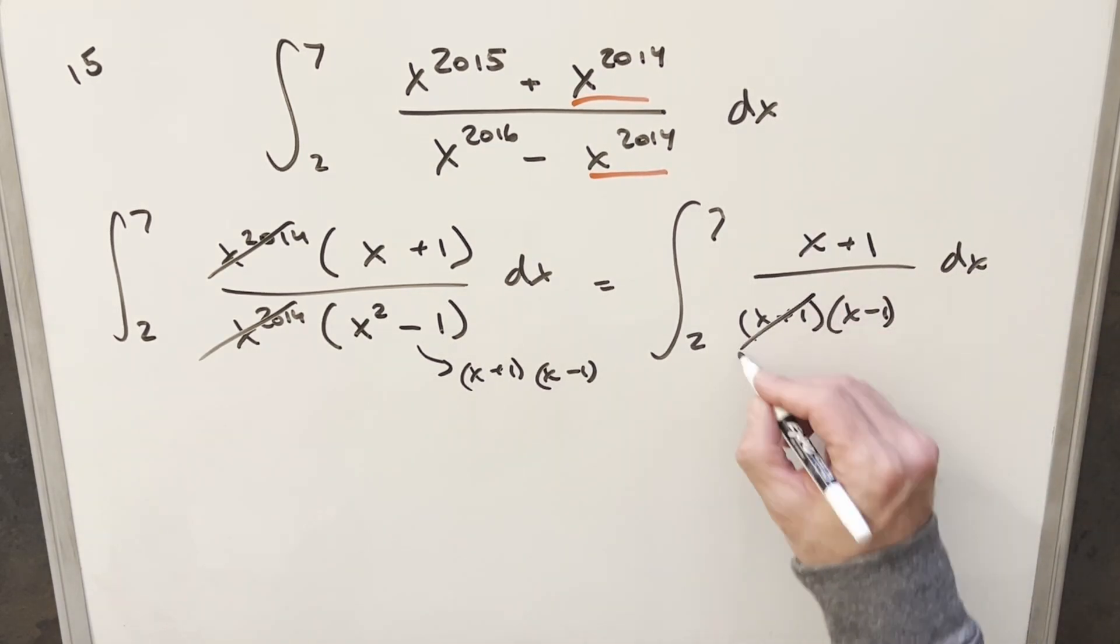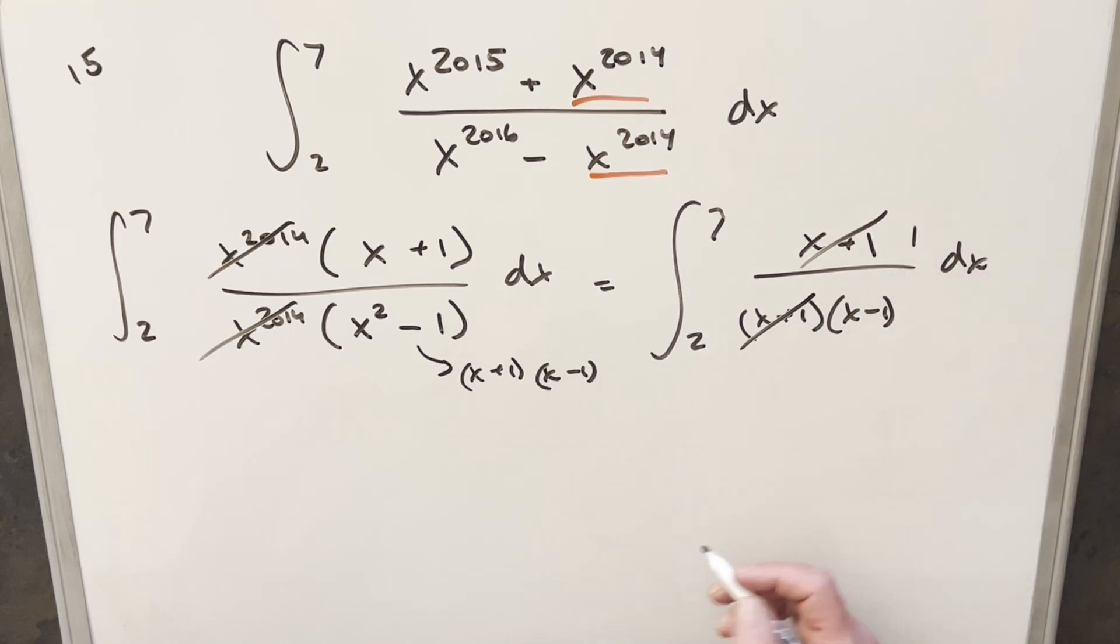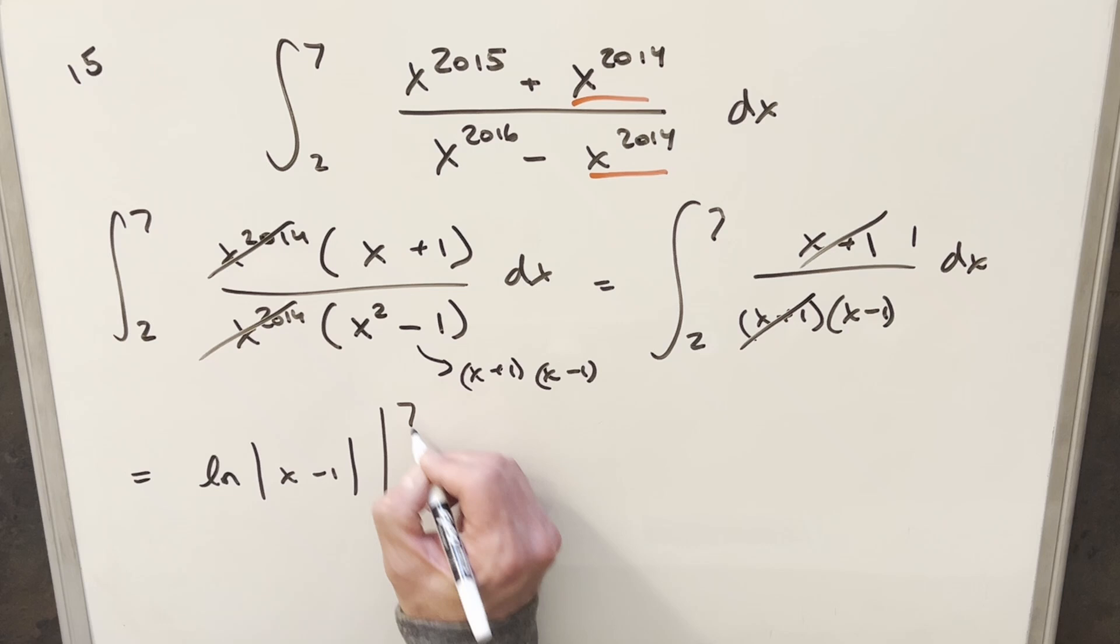I can cancel one more time. We cancel out the x plus 1s. We just have 1 in the numerator. Now we can integrate this. The integral of 1 over x minus 1 is natural log absolute value x minus 1. We need to evaluate from 2 to 7.